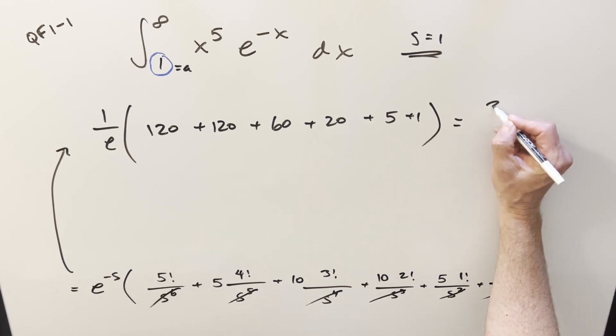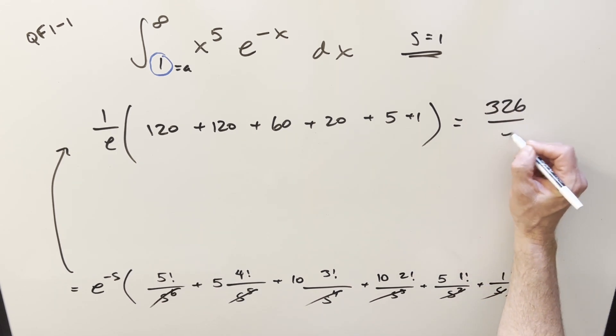So for my final solution of this, we just get 326 over e, and that's it. Okay, there you go, MIT 2025. Thanks so much for watching. Have a good day.